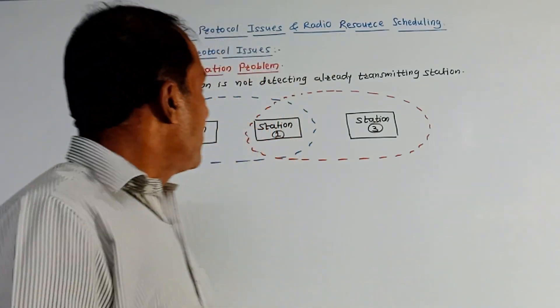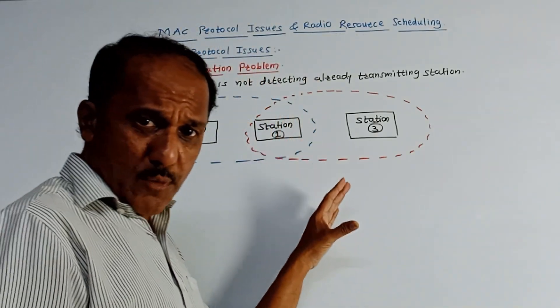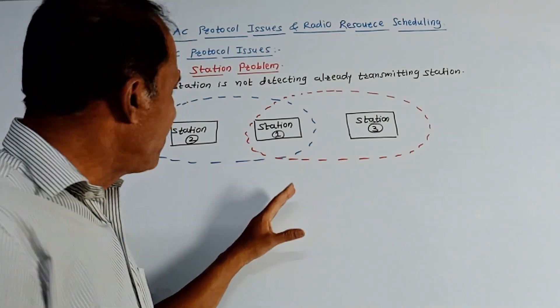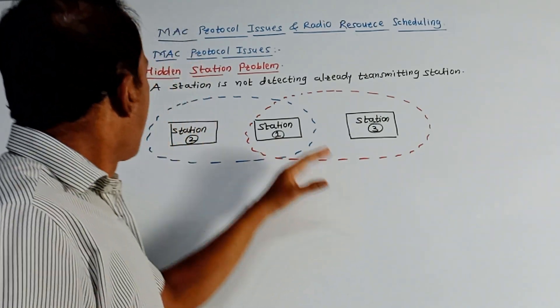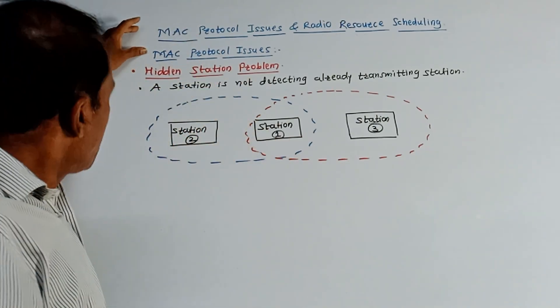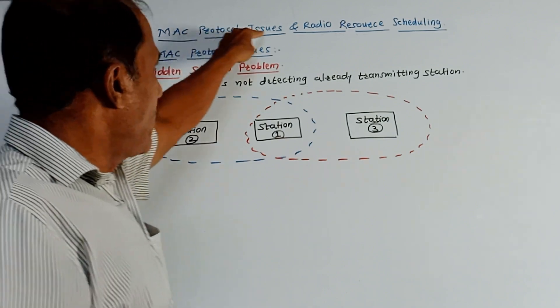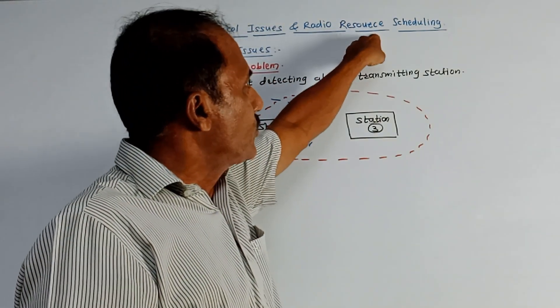Hello and welcome back to this channel. Dear students, this is the last topic of the last unit for the subject cellular network. So today's topic is MAC protocol issues and radio resource scheduling.